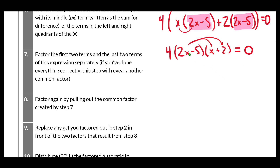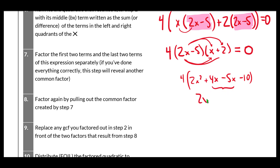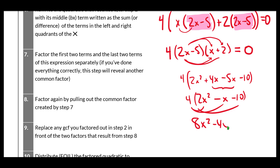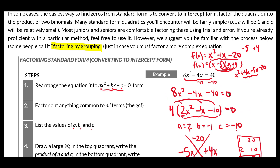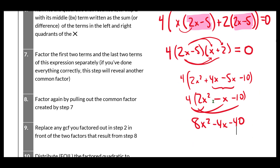I might want to distribute everything through to verify. FOILing (2x minus 5)(x plus 2): 2x times x is 2x², 2x times 2 is 4x, negative 5 times x is negative 5x, negative 5 times 2 is negative 10. Combining: 2x² minus x minus 10. Putting the 4 back in: 8x² minus 4x minus 40. Then adding 40 back gives exactly what I started with. Everything checks out perfectly.